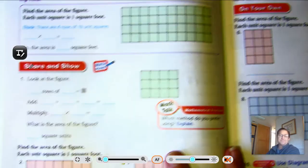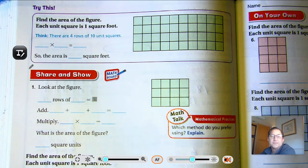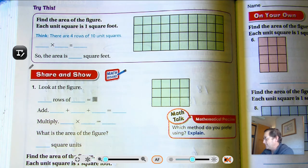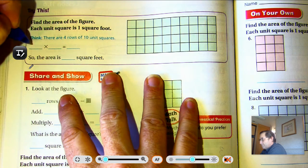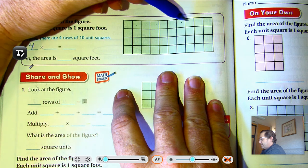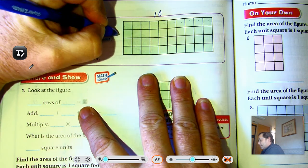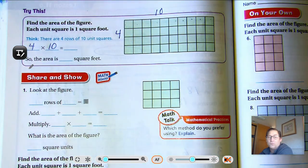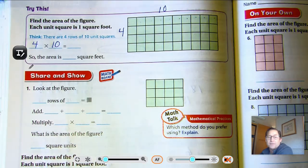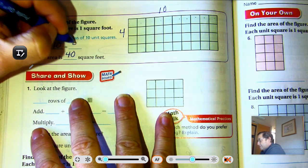Let's try this: find the area of the figure — each unit is one square foot. There are four rows of ten unit squares. One, two, three, four rows, and ten in each row. This is often referred to as a four-by-ten rectangle. So four times ten is forty.